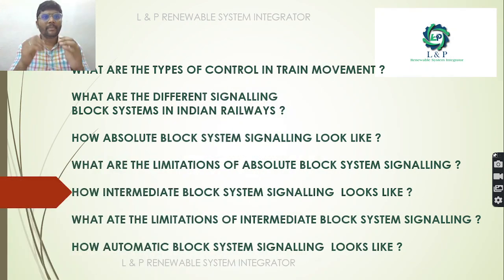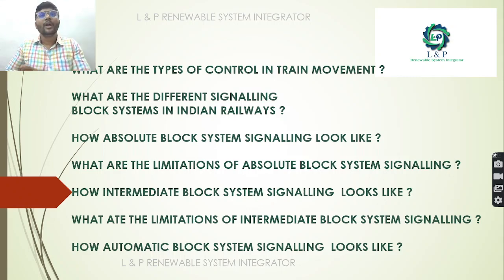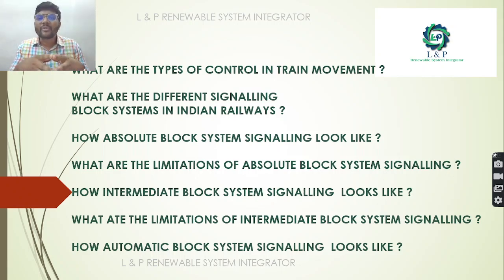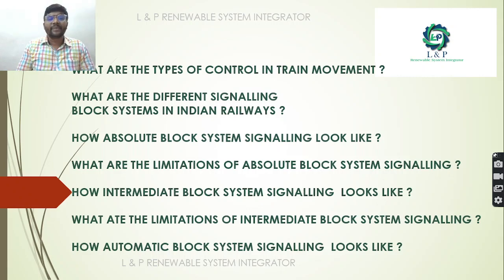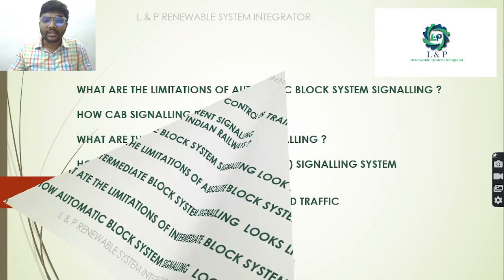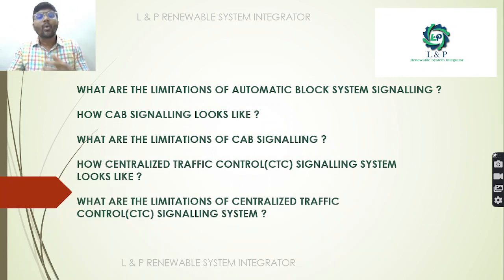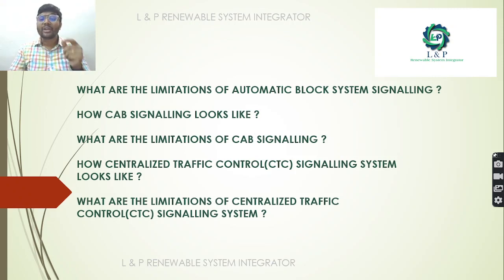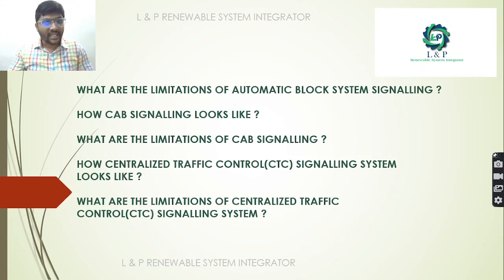In part one, we will cover: the different types of signaling systems used in Indian Railways, the different types of train movement control, how the Absolute Block System looks and its limitations, how the Intermediate Block System works and its limitations, how Automatic Block System signaling works and its limitations, how CAB signaling works and its limitations, and how Centralized Traffic Control signaling looks and its limitations.